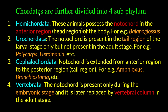Chordates are divided into 4 sub-phyla. In the first sub-phylum, the notochord is present only in the anterior region — this is called the head region. An example is Balanoglossus, which belongs to Hemichordata.